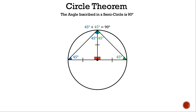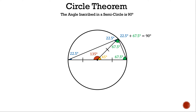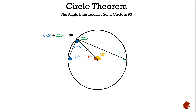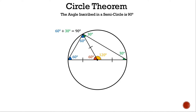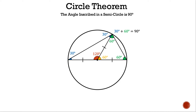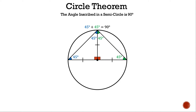You may wonder: does it matter where the inscribed angle is? No, it doesn't — as long as the hypotenuse is the diameter. Moving the inscribed angle to the right, it's still 90 degrees, now formed by 22.5° and 67.5°. Moving it left, the angles flip-flop. Moving it again, it's 60° and 30°, then 30° and 60°. The inscribed angle is always 90° as long as the longest line is the diameter.